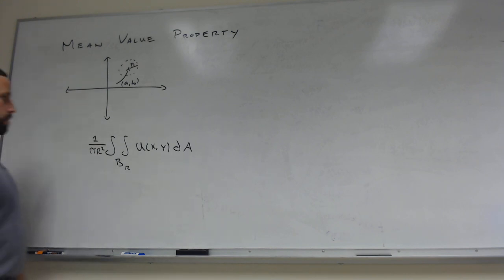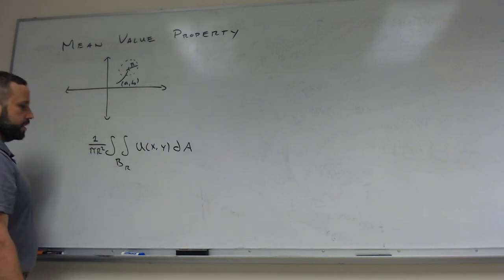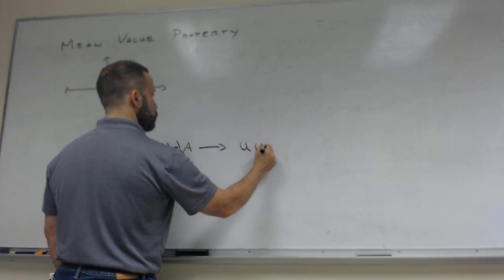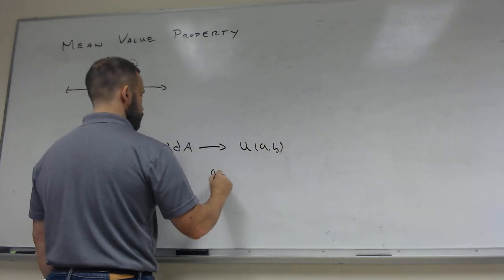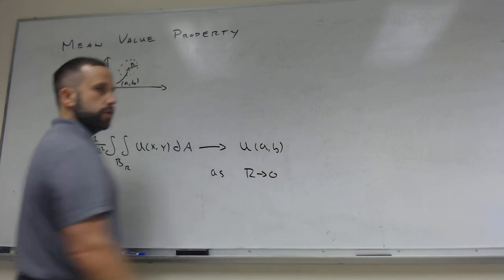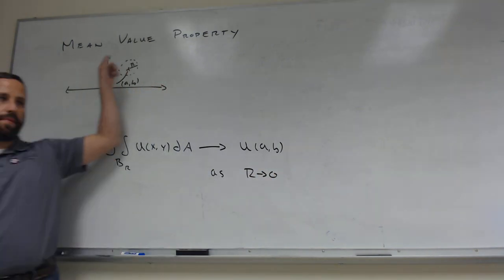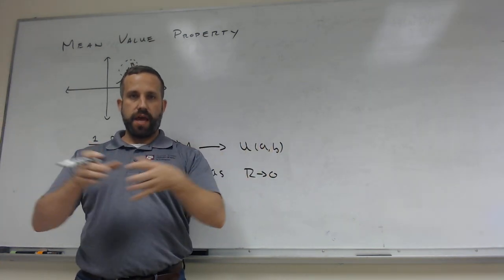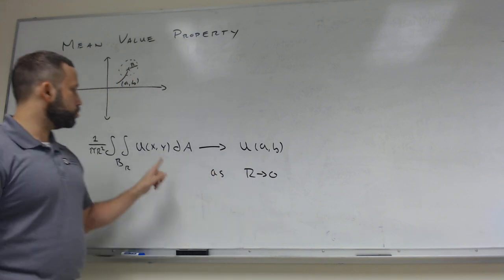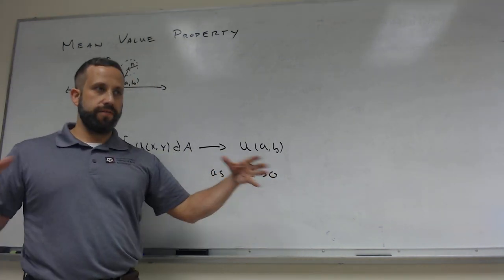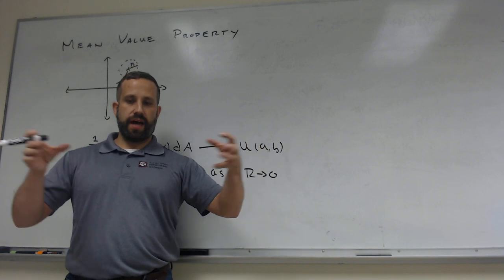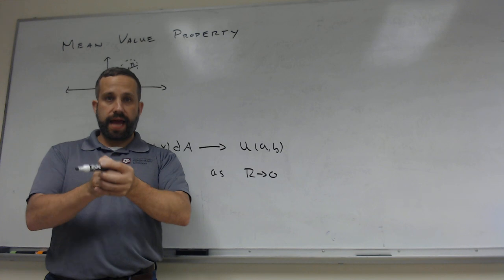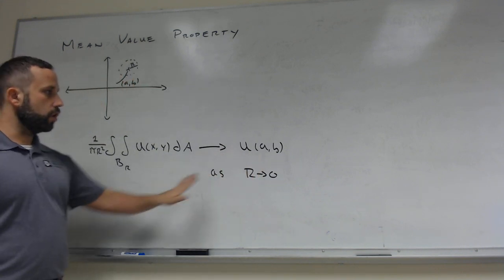For any continuous function, as R goes to 0, this average goes to U of (A, B). So if I pick a point (A, B) and take averages of a function over shrinking balls, then the averages are going to go to the function evaluated at that point, if U is continuous.